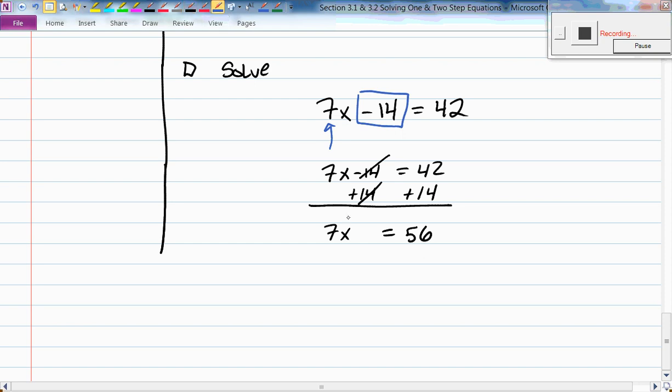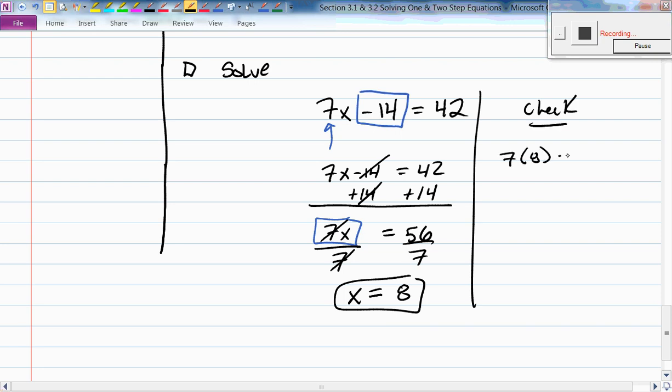Now I am multiplying x by 7. What's the inverse of multiplying by 7? Dividing by 7. Good. So divide by 7. That means x has to be 8. Andres says 8 is the answer. Let's check. Is 7 times 8 minus 14 equal to 42? 7 times 8 is 56. 56 minus 14, is that 42? It sure is. 42 is 42.